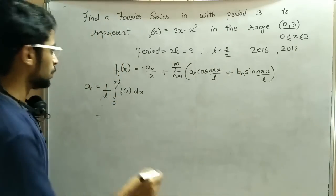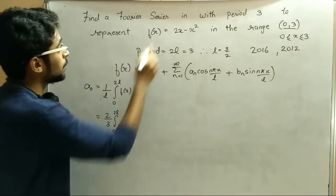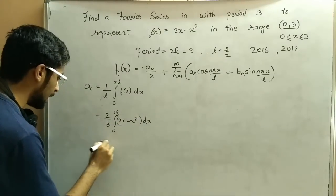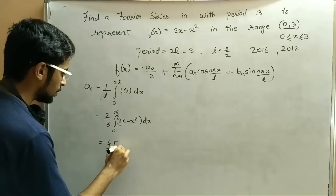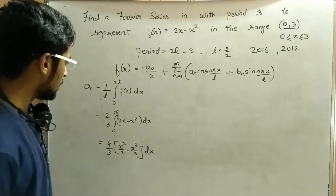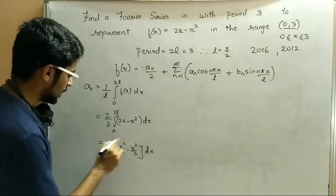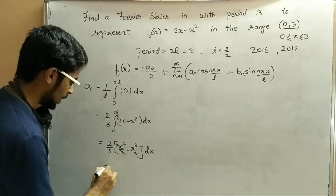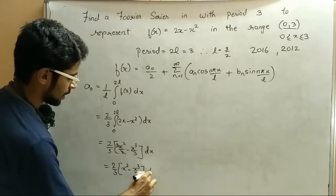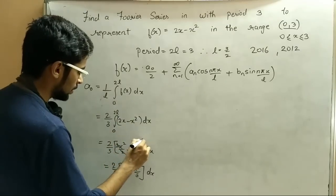So 1/L gives us 2/3, and we integrate from 0 to L, which is 0 to 3. The function f(x) = 2x minus x squared. We integrate this: 2/3 times the integral of (2x - x²) dx, which gives us 4/3 times [x²/2 - x³/3]. After correction, this becomes [x² - x²/3] with limits 0 to 3.